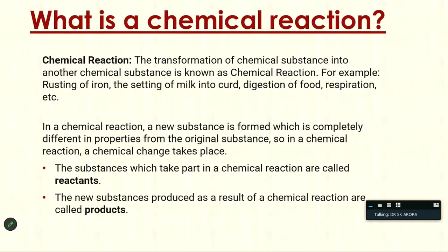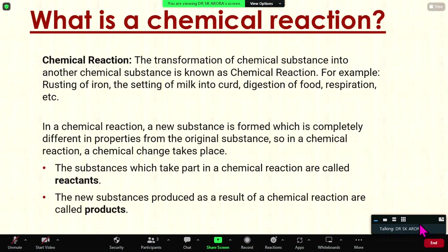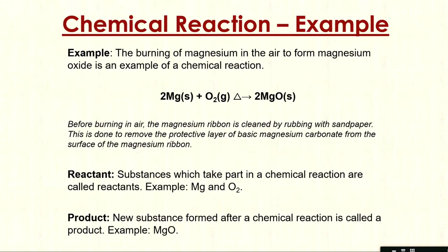In a chemical reaction, a new substance is formed which is completely different in properties from the original substance. A chemical change takes place. The substances which take part in chemical reactions are called reactants, and the substances produced as a result of chemical reactions are known as products. Now, an example of chemical reaction.